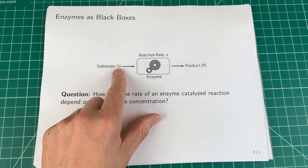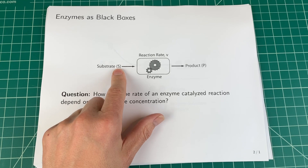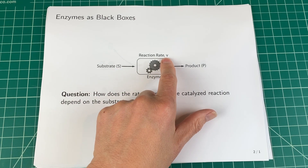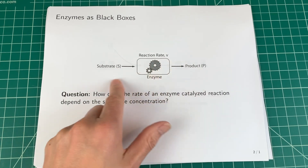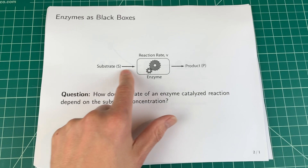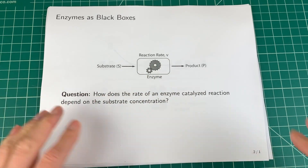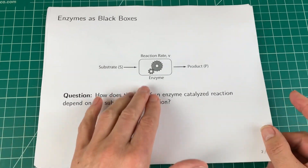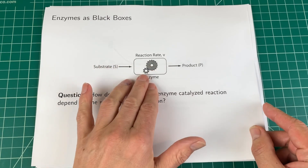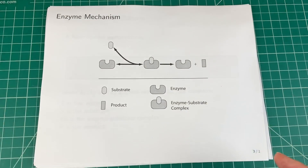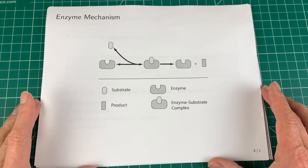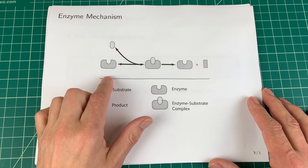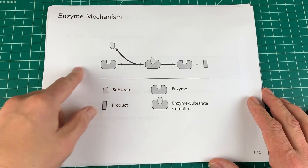For example, if I were to double the substrate concentration, what would happen to the reaction rate — would it also double? If I halved it, what would happen to the reaction rate? That's the question we're going to address. We can expand this black box into a proposed mechanism.